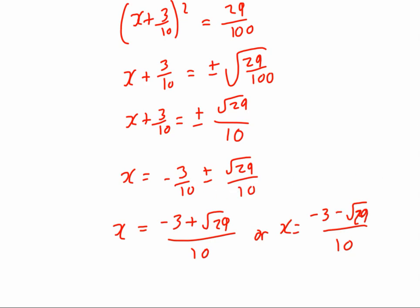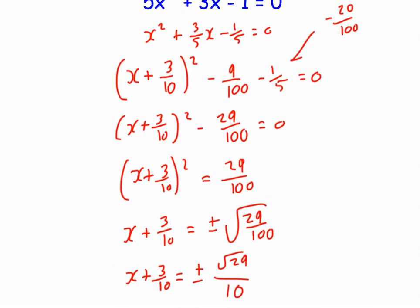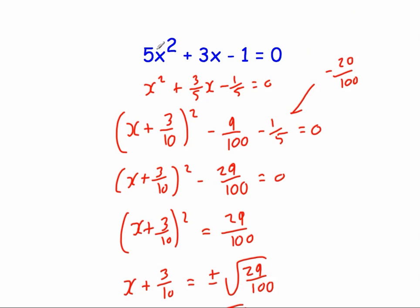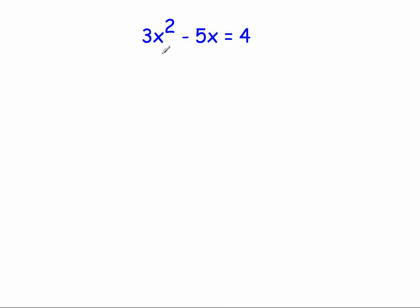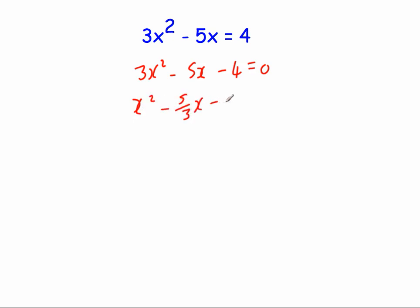So that's how you solve it using completing the square. The main point to get started is that because it was a 5x squared, you could divide through by 5 since it equals 0. The second example is very similar: we have 3x squared minus 5x minus 4 equals 0, bringing it all to one side. We divide through by 3, giving us x squared minus 5 thirds x minus 4 thirds equals 0.